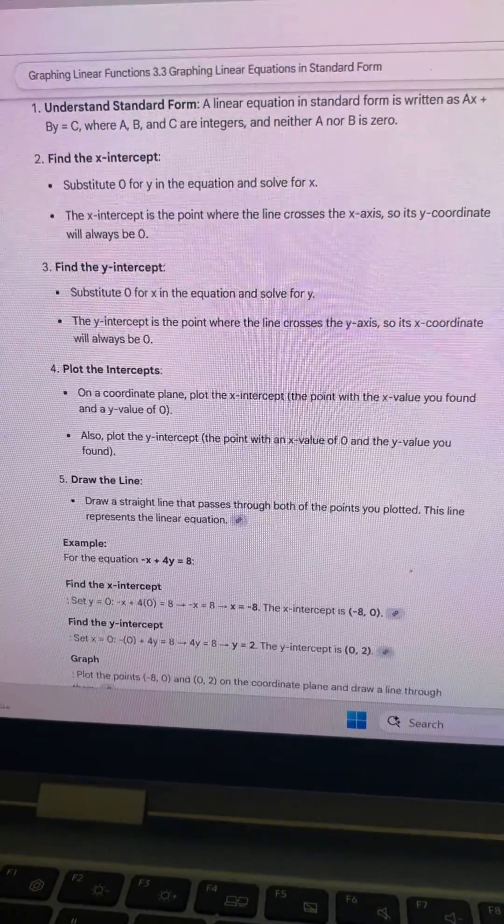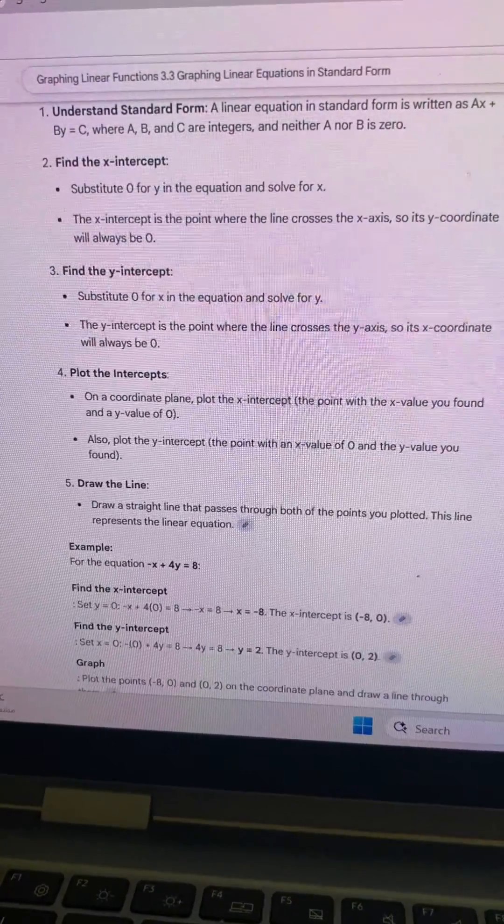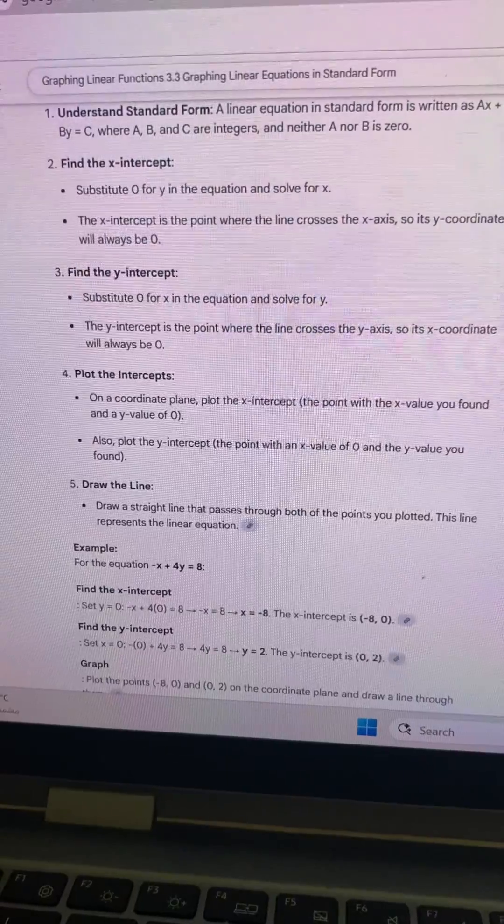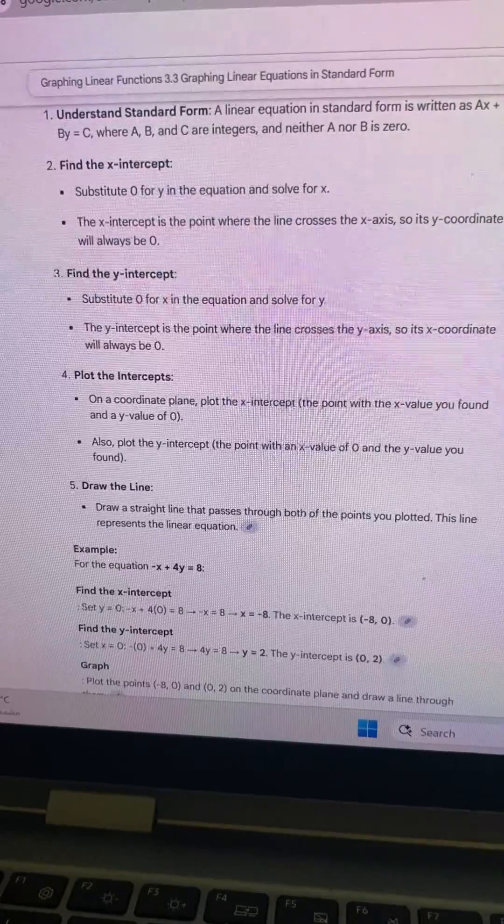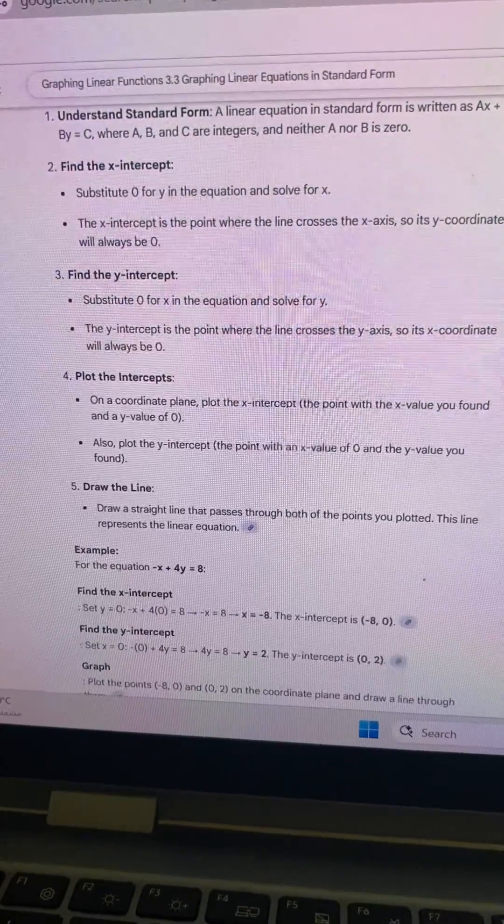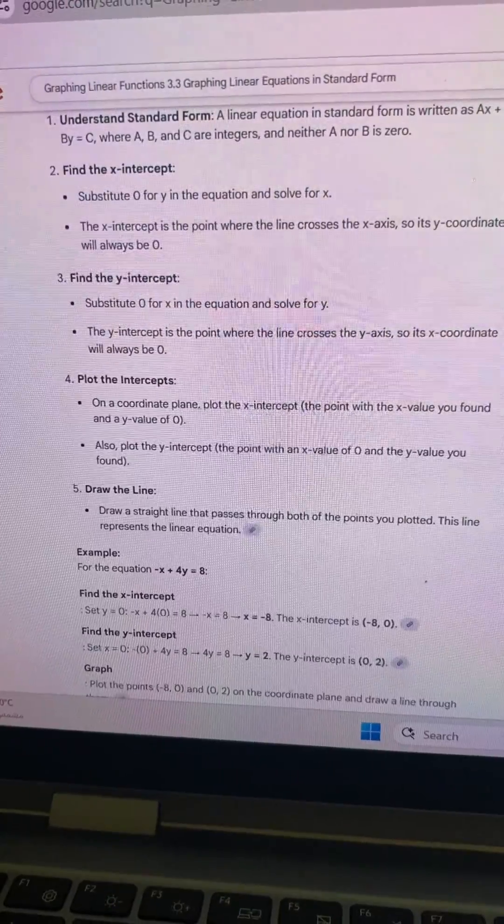Find the y-intercept. Set x = 0: -(0) + 4y = 8, 4y = 8, y = 2. The y-intercept is (0, 2).